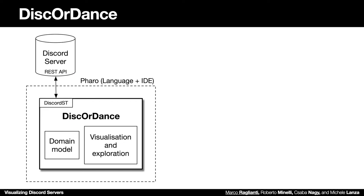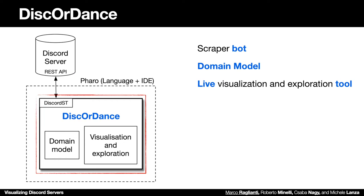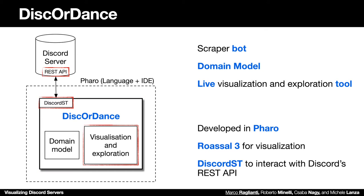Discord Dance is the tool we developed for live visualization and exploration of a domain model that has been scraped by a bot. It has been developed in Faro and it uses Roastery for visualization and Discord ST to interact with the Discord REST API.